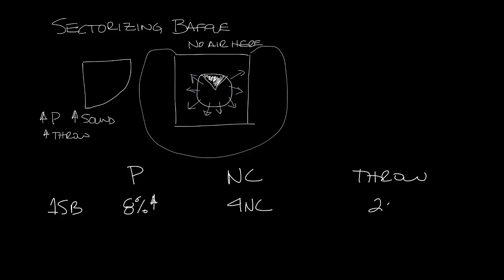If you put in two, so now you've blocked off half the neck, you get a 28% increase in pressure, 9 NC added, and 50% longer throw.